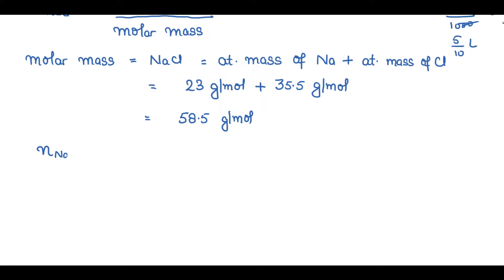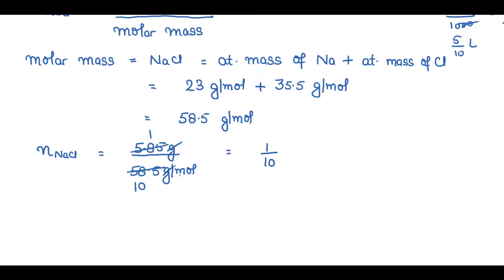Now, n(NaCl) equals 5.85 grams divided by 58.5 g/mol. Cancelling grams, 5.85 divided by 58.5 equals 1/10. Taking the mole unit from denominator to numerator, 1/10 equals 0.1 mole. So in the 500 mL solution, the number of moles of NaCl is 0.1 mole.